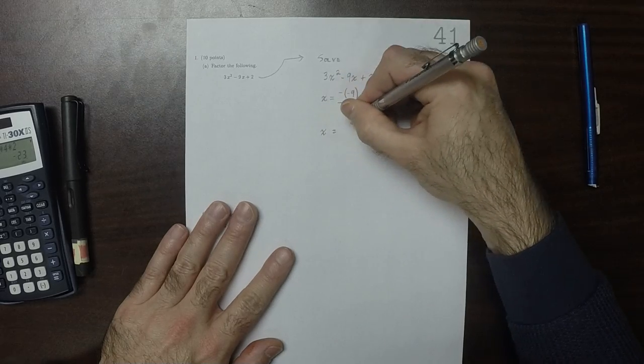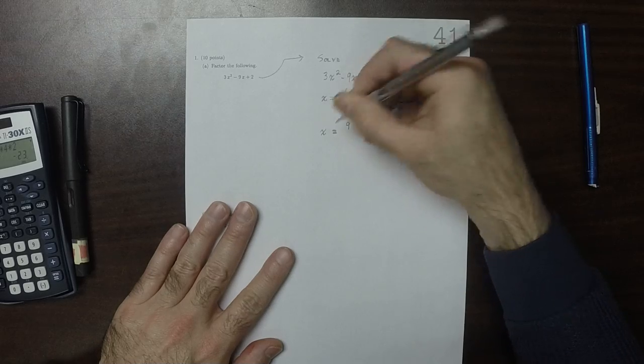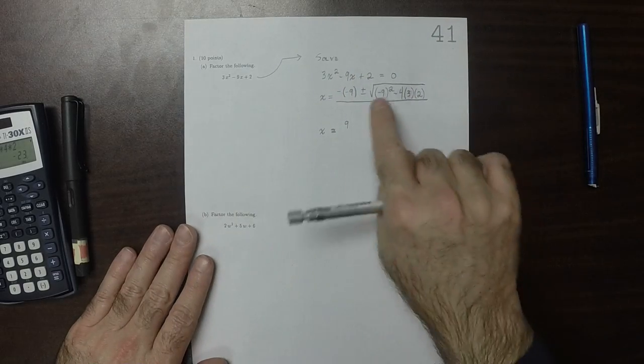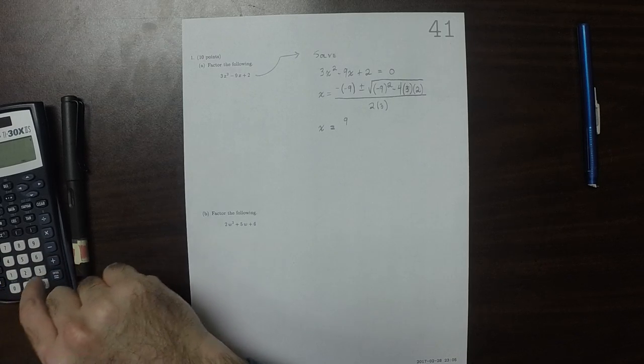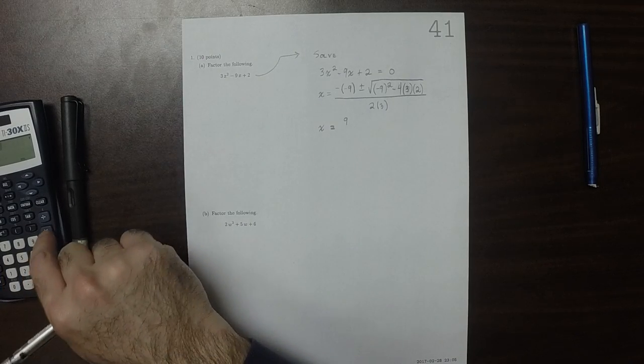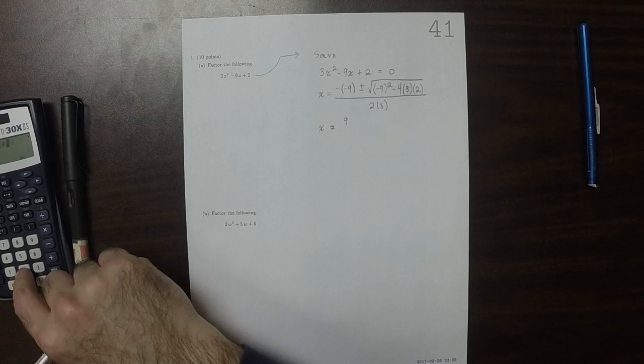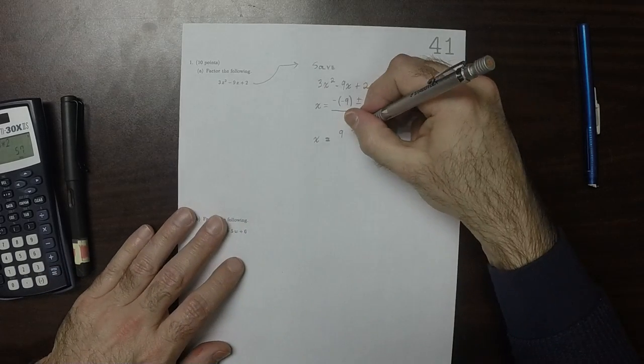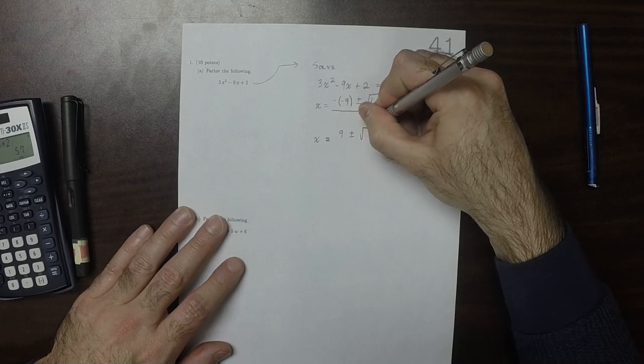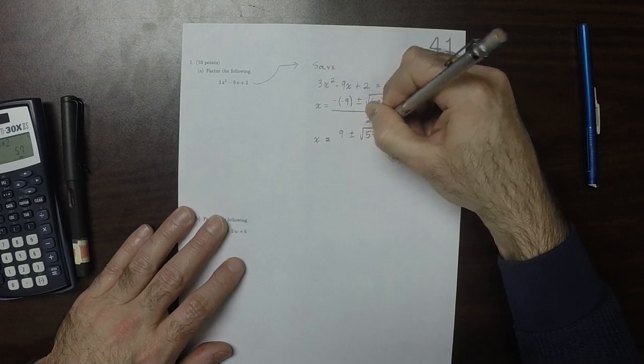So x is 9. And then what's under the radical? So that would be 81 minus 4 times 3 times 2. So that'd be 57. So plus or minus square root 57 divided by 6.